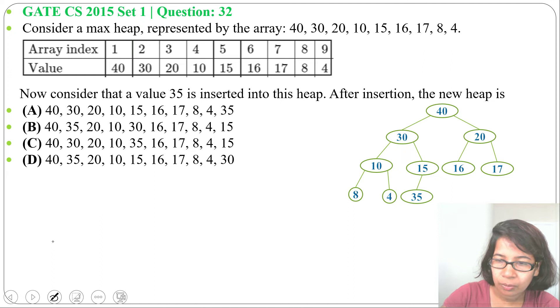Next we'll insert 35. 35 will be a child of 15. Now we need to heapify its parent, meaning we need to heapify 15. We'll swap 15 with 35. 35 will come as parent and 15 will be child. Next we need to heapify its parent, meaning we need to heapify 30. 30 will swap with 35. So 30 will be here and in 35's place we'll write 30.